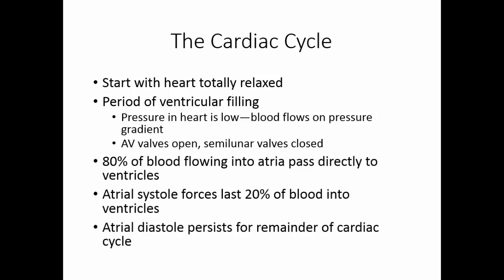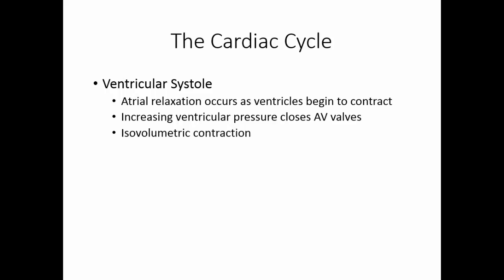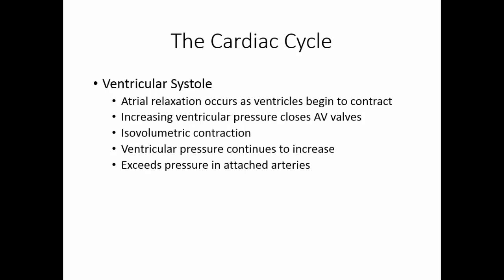Atrial diastole, or relaxation, is then persistent for the remainder of the cardiac cycle — the atria contract once, and then they sleep the rest of the time. In ventricular systole, as soon as atrial relaxation begins, the ventricles begin to contract. As they increase pressure, this starts to force blood back up toward the atria, so the AV valves close. We go to a period of isovolumetric contraction — the AV valves are closed, the semilunar valves are still closed, and there's no change in the volume in the ventricles. As the ventricles continue to contract, pressure increases until it exceeds the pressure in the attached arteries, so the semilunar valves are forced open and blood is forced into the arteries.